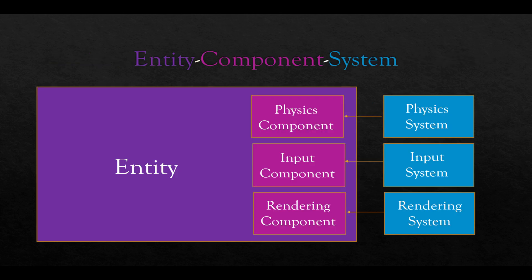Systems know which components to talk to because they share the same name. So a physics system would talk to a physics component. An input system would talk to an input component. And a rendering system would talk to a rendering component. Now, again, an entity contains all of these components, physics, input, and rendering components, and each system, in turn, only talks to those components.